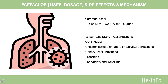Bronchitis: Acute bacterial exacerbations of chronic bronchitis or secondary bacterial infections of acute bronchitis due to Haemophilus influenzae (excluding beta-lactamase negative ampicillin-resistant strains), Moraxella catarrhalis, or Streptococcus pneumoniae: Extended release tablets, 500 mg, PO Q12H, for 7 days.